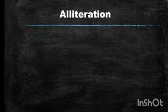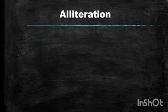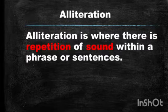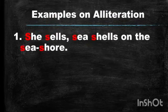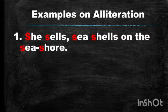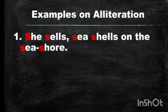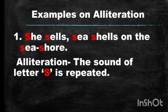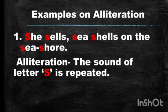Let's see the second figure of speech. The second figure of speech is alliteration. What is alliteration, children? Alliteration is where there is repetition of sound within a phrase or sentence. Example number one: 'She sells sea shells on the sea shore.' This sentence is alliteration because the sound of the letter S is repeated. When there is a repetition of a sound of a letter in a sentence, the figure of speech is alliteration.